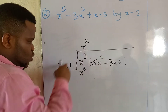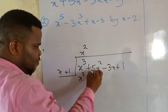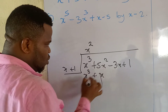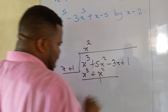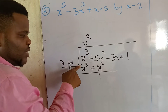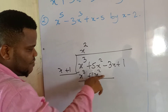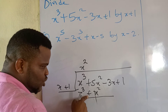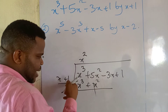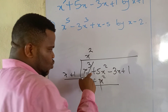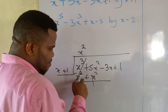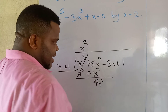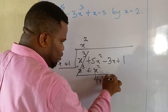x squared times x gives x cubed, and x squared times 1 gives plus x. We draw a line and introduce a minus sign — this minus sign affects everything below. So x cubed minus x cubed cancels out, and 5x squared minus x squared gives us 4x squared.